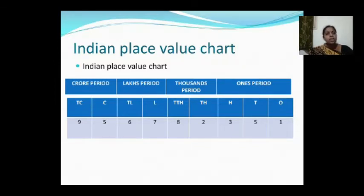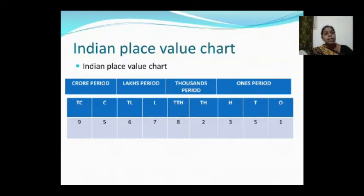After the ones period, the thousands period has thousand and ten thousand — that is two place values. The lakhs period also has two place values: lakhs and ten lakhs. The crore period also has two place values: crore and ten crore. I have taken the example 95 crore, 67 lakhs, 82,351.